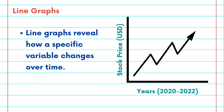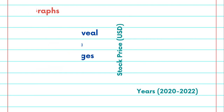Line graphs are exceptional for revealing how a specific variable changes over time. If you're tracking stock prices, for example, a line graph will illustrate the price's journey with precision.